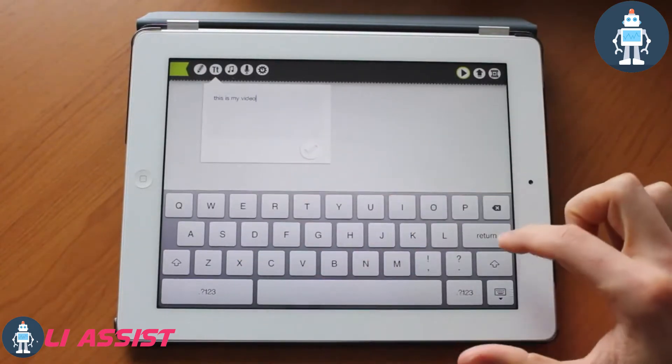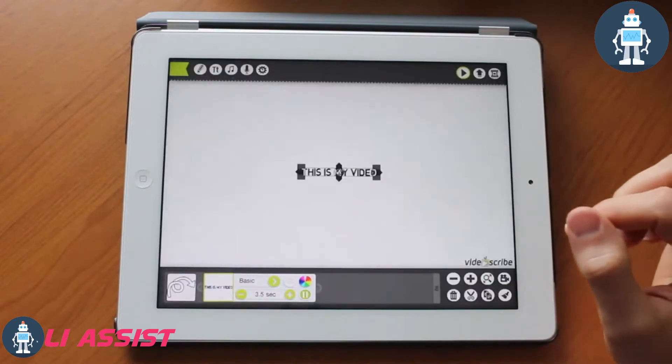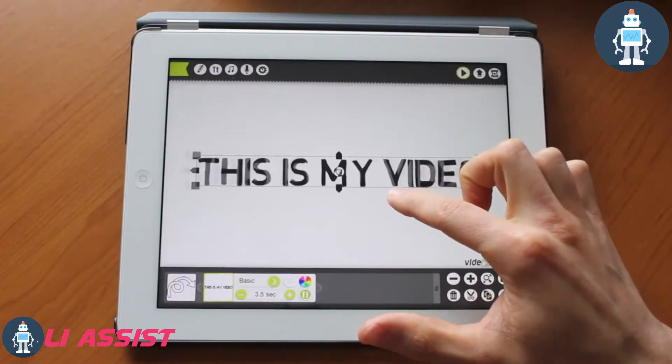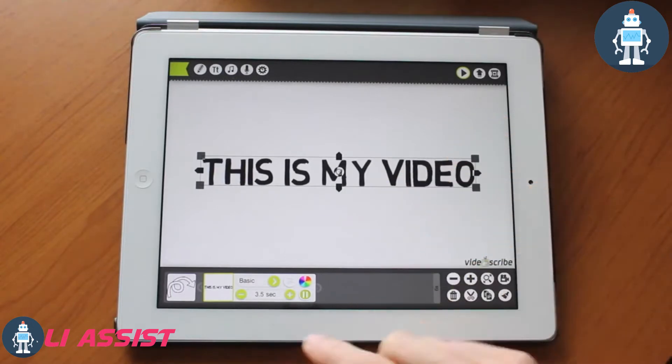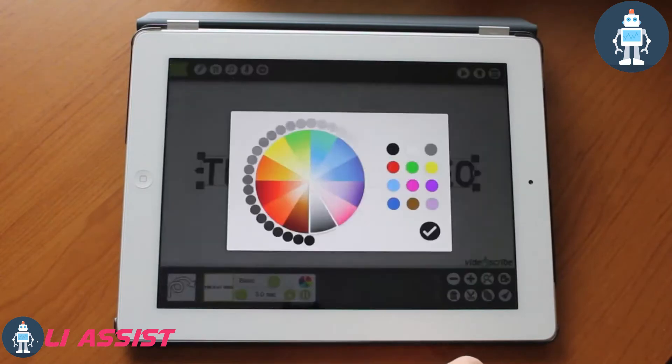You could tap on that just like any other object and resize it. Let's go ahead and make it nice and big to fit the screen and set it to about three seconds. Just to spice it up, we'll make it red.